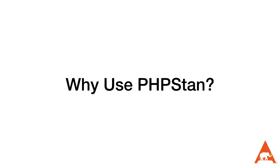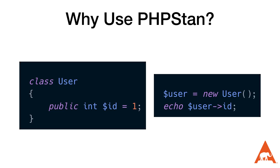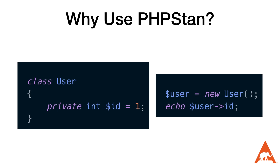Let's discuss an example of what PHPStan can prevent. In one file, we might have a User class where we have a public integer that's the ID. Then in another file, we're going to create a new User instance and display that ID. If everything works we can go about our day, but eventually we'll realize we need to refactor to properly encapsulate the ID. So someone comes along and says that public property shouldn't be public — it should be private — and makes that change.